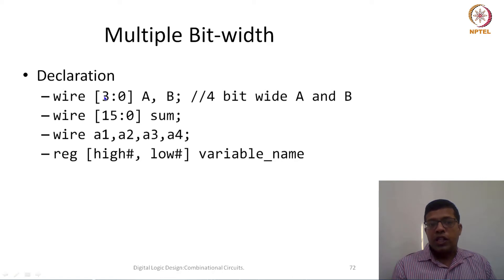When we are writing like this 3 colon 0, that means it is a 4 bit wide signal A and B. If we want to define 16 bit wide, then I can say square bracket 15 colon 0. A1, A2, A3, A4 are standard wires. When we are not writing anything in the square bracket, the default size is single bit. But if we put this square bracket and colon, it is a bit vector or we can call it a bus.